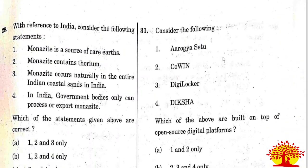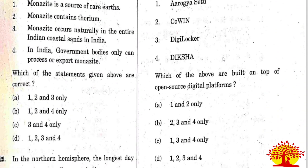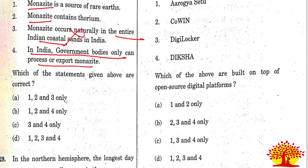Twenty-eighth question with reference to India, regarding monazite sand: Option B is the right answer - statements 1, 2, and 4 are correct. The statement that the entire Indian coastline has monazite is wrong, so statement 3 is eliminated.